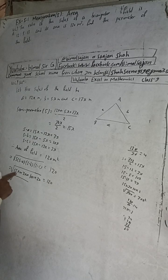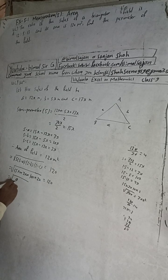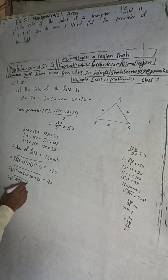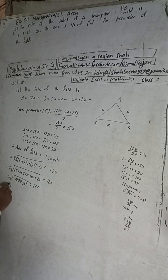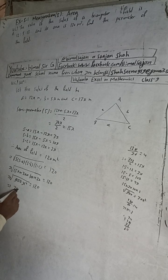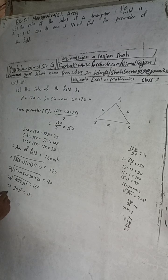Multiplying inside the root: 15 × 3 = 45, × 10 = 450, × 2 = 900. And x × x × x × x = x⁴. So we get root of 900x⁴, which equals 30x².